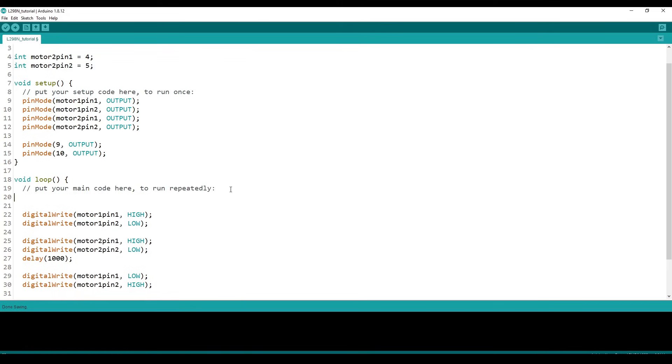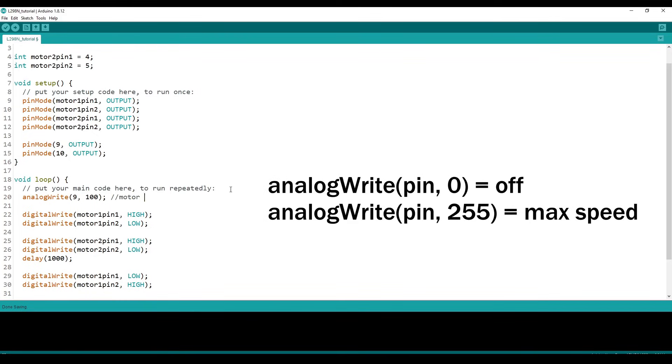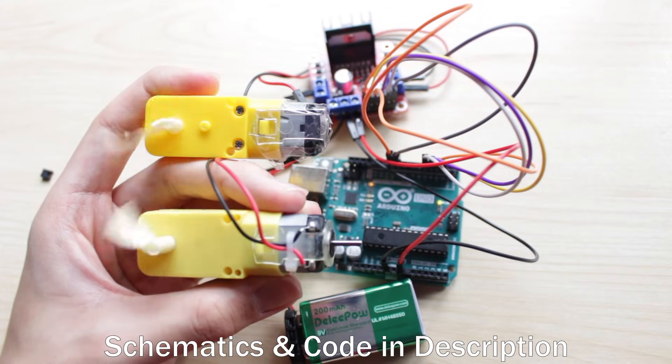Now in the code you can set the speed with PWM using analog write where 0 is off and 255 is max speed. Let's make motor 1 go at 100 and motor 2 go at 200. And here's what it looks like.